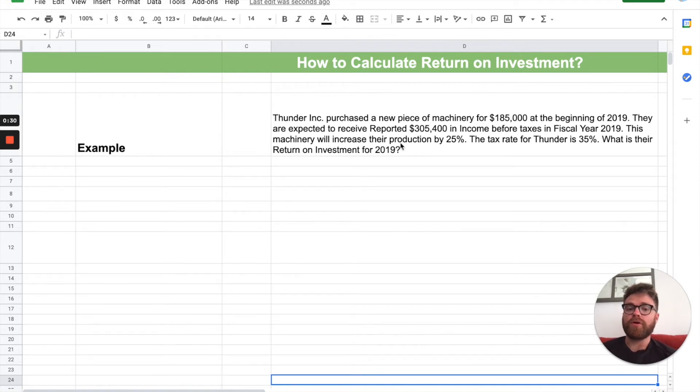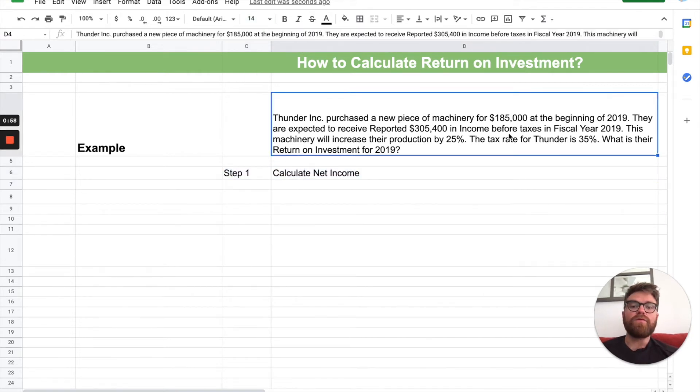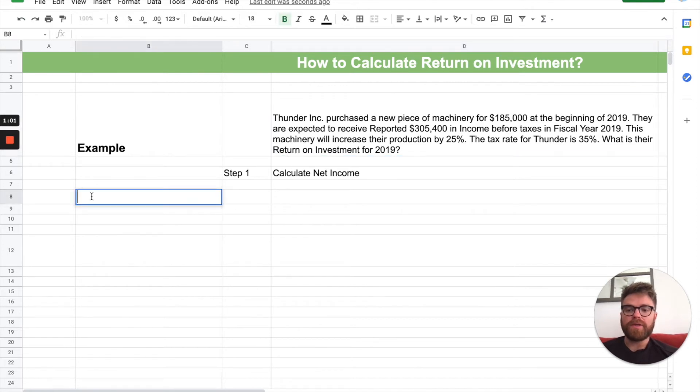For that whole fiscal year of 2019. This machinery will increase their production by 25%. The tax rate for Thunder is 35%. What is their return on investment for 2019? So, just for 2019, let's focus on that here. Now, the first thing you have to do, so this is step one, is we have to go ahead and calculate net income. Now, why do I say that? Because they give you the income before taxes. And if you remember, the formula for return on investment is net income divided by total assets invested. So, we have to get income after taxes. That's what net income means, after taxes.